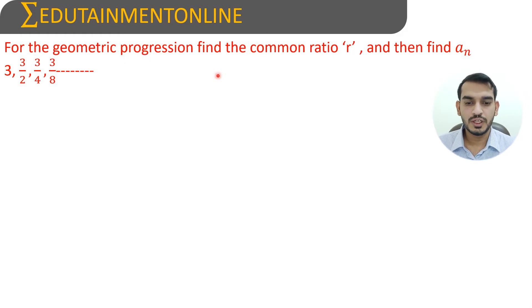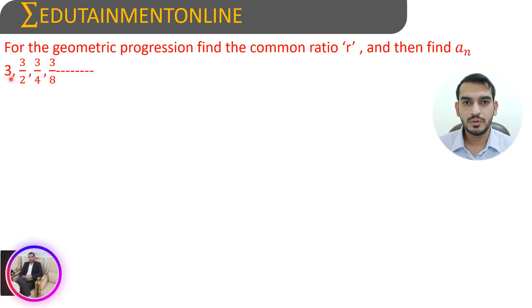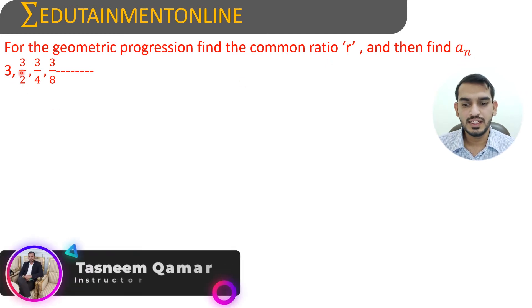For the geometric progression, find the common ratio R and then find An. The geometric progression given is 3, 3/2, 3/4, 3/8, and so on.